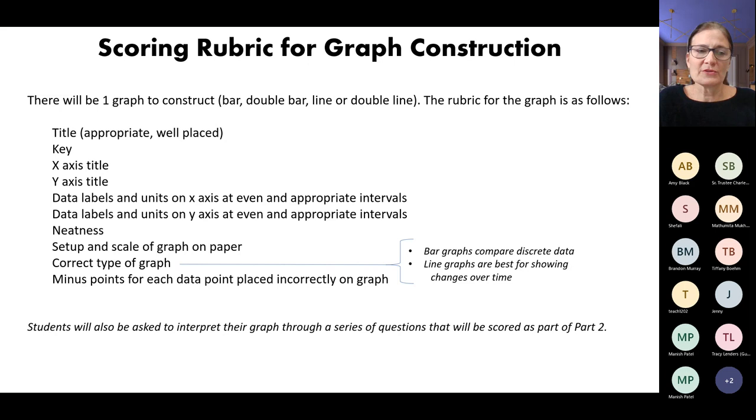Set up and scale on the graph paper. It shouldn't be just in a tiny little quadrant of the graph paper. They should space it out to use at least three quarters of the graph paper. We'll look for the correct type of graph. A bar graph is what I'm looking for if there's discrete data given. If you're given measurements or temperatures that can change over time, then a line graph is the graph that I'm looking for. And then each of the data points need to be placed appropriately on your graph.